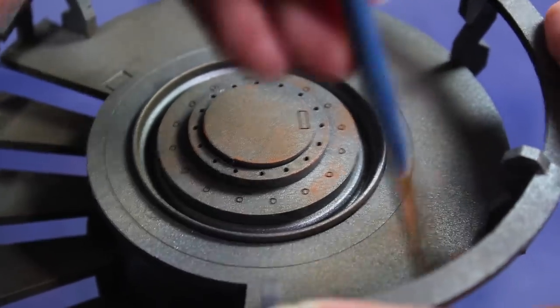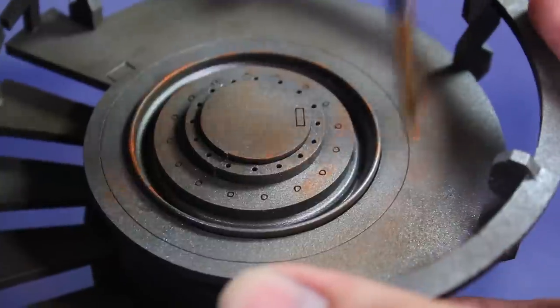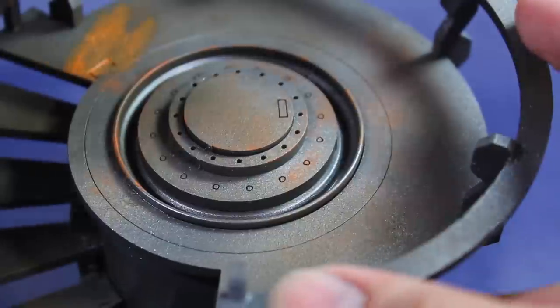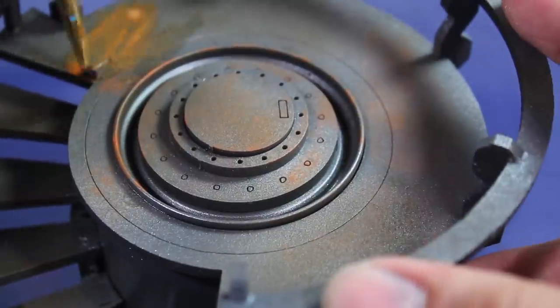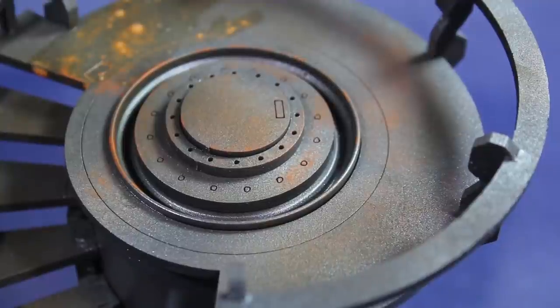Next, I dry brushed some Citadel Dry Ryza Rust over the whole model. I can see in the corner I put it on a little too thick, so I mixed it with a little water and then hit it with a paper cloth to knock it back down to the effect I wanted.